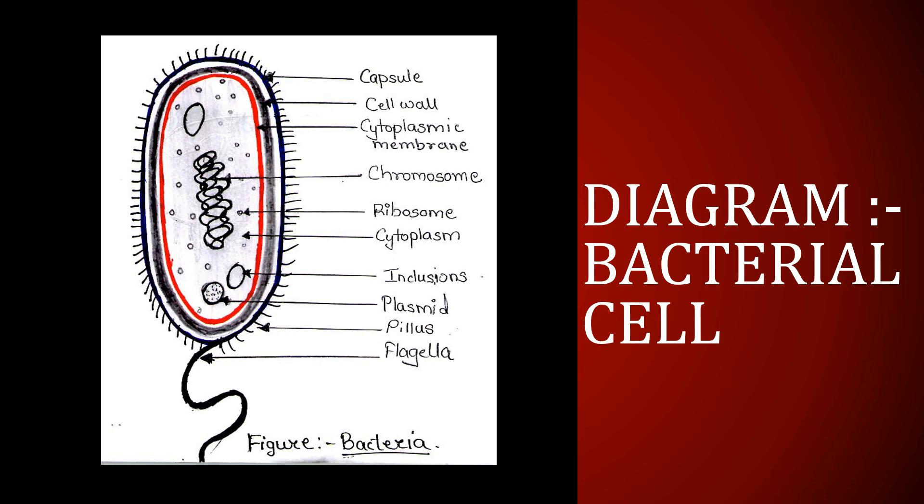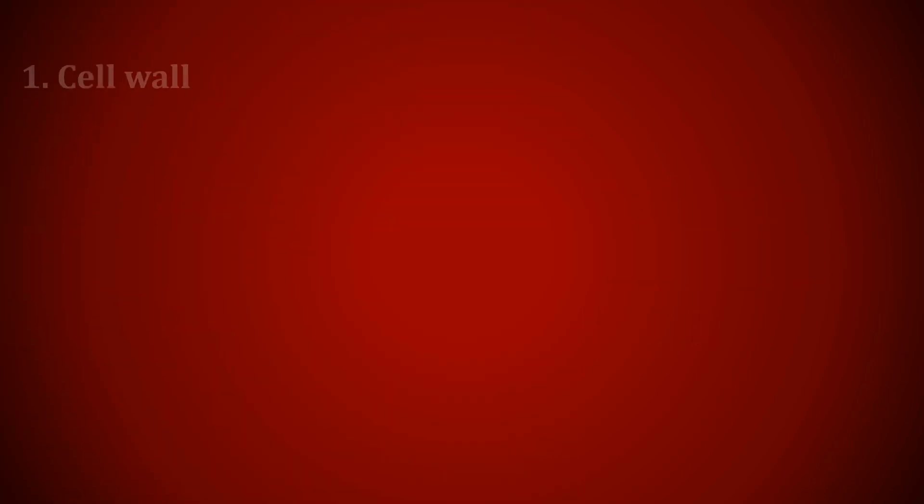The cytoplasm contains ribosomes, chromosomes, inclusion bodies, and plasmids. This is a basic structure of a bacterial cell. Now let's study these structures one by one.